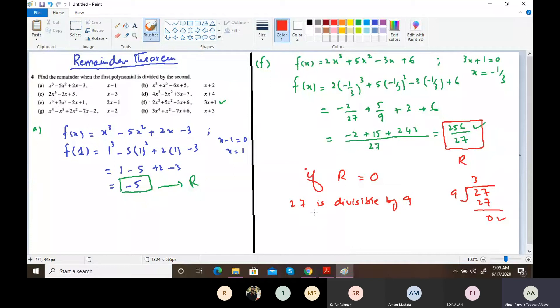When something is completely divisible, the remainder is always 0. So if the remainder, this answer, if you get it equals to 0, it means the first expression is completely divided by the second one.